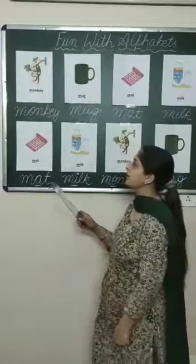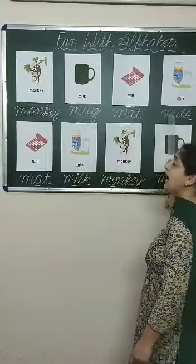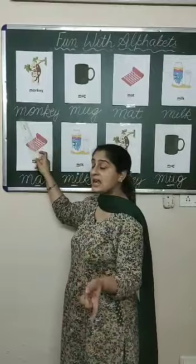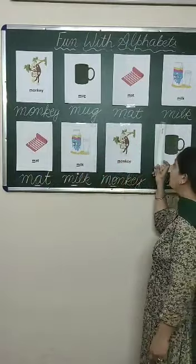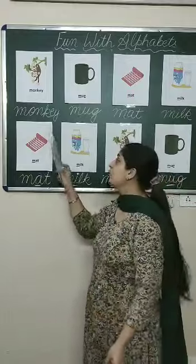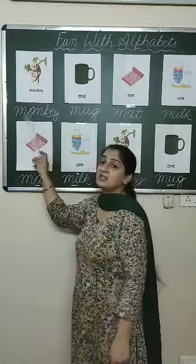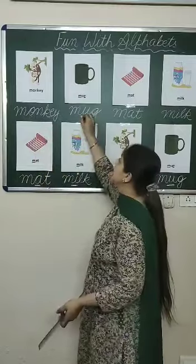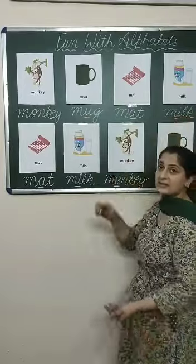Let's take another example: monkey, mug, mat and milk. The first letter of monkey, mug, mat and milk is all M. In that case, we look at the second letter. In monkey it's O, in mug it's U, in mat it's A, and in milk it's I.